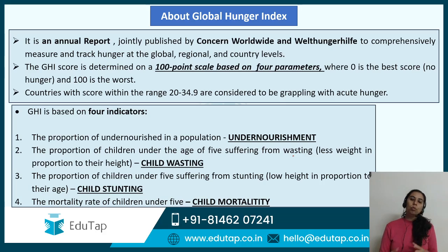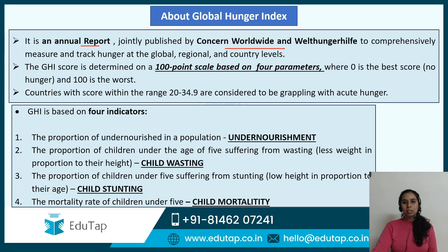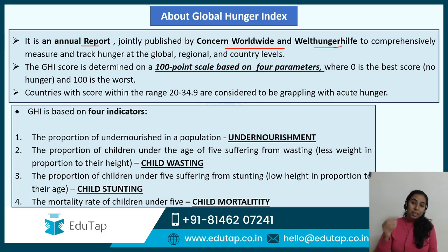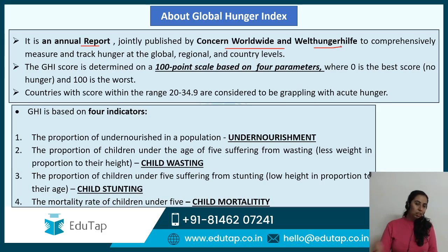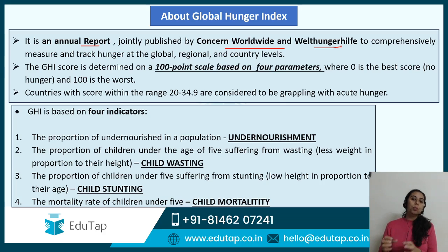Let me tell you about GHI itself. The Global Hunger Index is an annual report jointly published by Concern Worldwide and Welthungerhilfe to comprehensively measure and track hunger at the global, regional, as well as country levels. Not only global levels, but also regional and country-specific levels are measured as per this particular report. The score is determined on a 100-point scale based on four parameters.